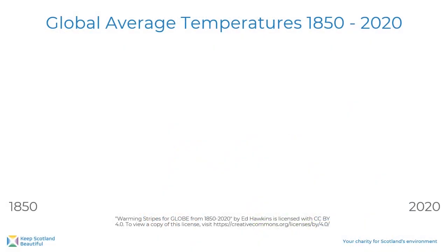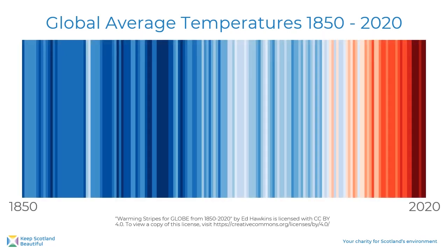We can see the effect of the increase in greenhouse gases by looking at the temperature changes over the past 170 years. Our climate does change naturally over time, but human activity is causing it to change a lot faster than it has in the past.